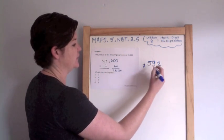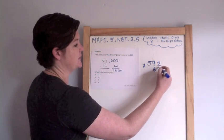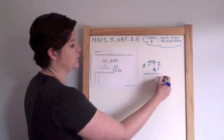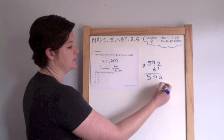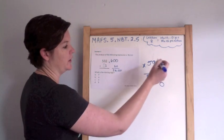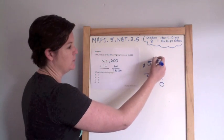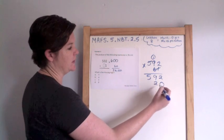Alright, so 592 times, plug in 61. 2 times 1 is 2. 1 times 9 is 9. 1 times 5 is 5. 0 to hold the place. Cross out the 1. 6 times 2 is 12. Woo, it's high up here in the clouds. Nice landing, dude.